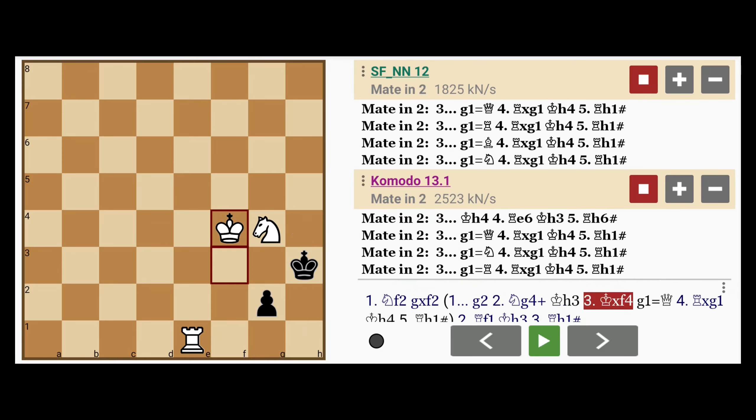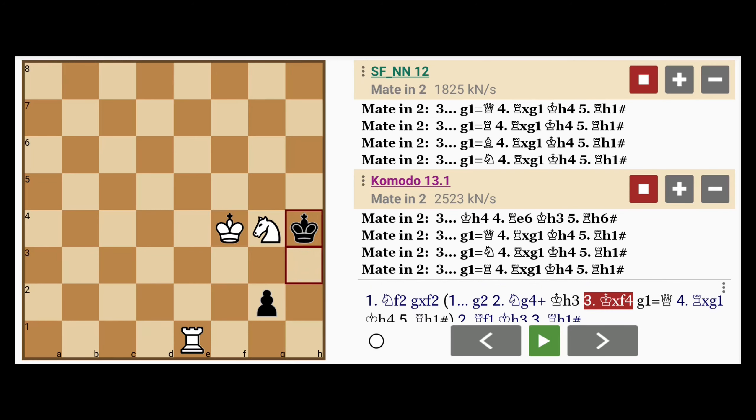Alternatively, at this point, if instead of promoting the pawn, black had played king to h4, all white needs to do is play rook to e6.